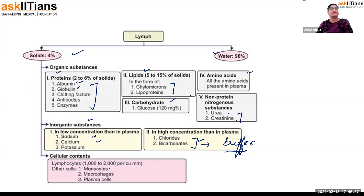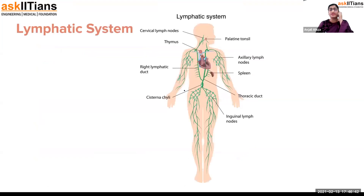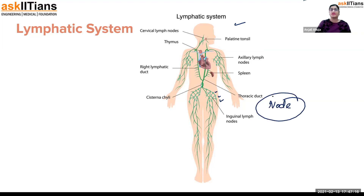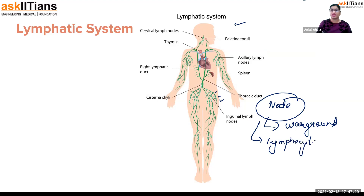Now for lymphatic organs. Here is a diagram of the lymphatic system — shown in green/pale color — with lymphatic vessels throughout the body going into all parts. You can see small swellings along the vessels; these are lymphatic nodes. Depending on which area a node is in, we name it accordingly. A lymphatic node is like a war ground where the number of lymphocytes is maximum and pathogen-killing cells are at their highest. If any pathogen attacks the body, it is dragged toward the lymphatic node and killed there.